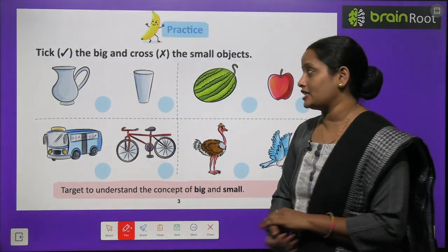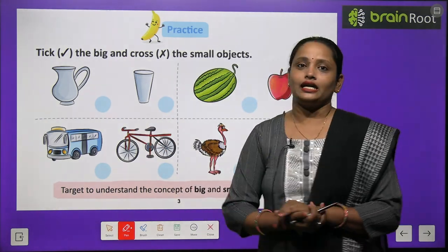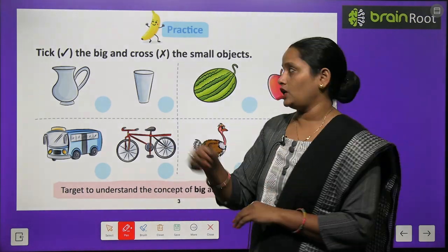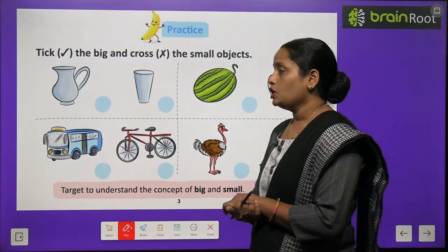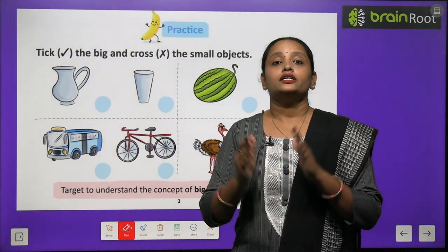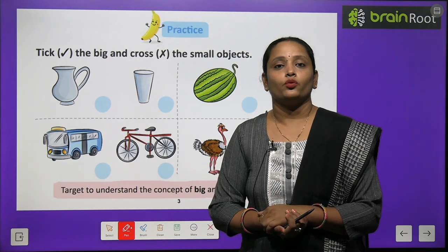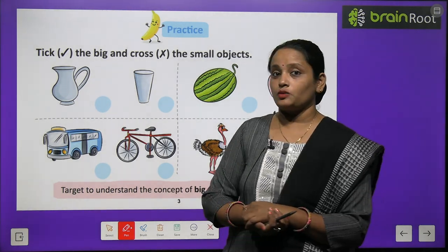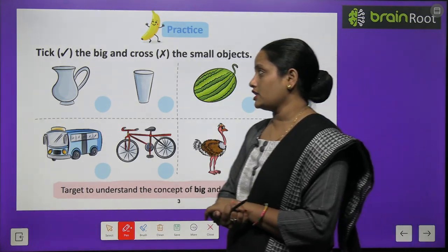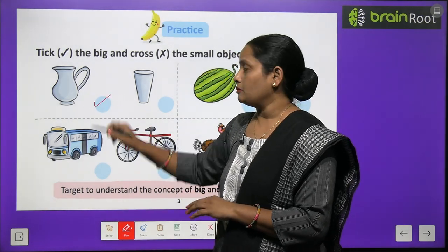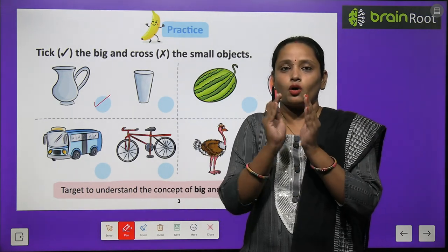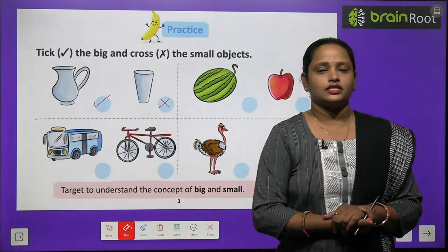Yahaan pe jo first picture hai, ismein ek jug hai aur doosra hai glass. Toh aap paani peete hain na? Jug mein mammi bohut sara paani leke jaati hai aur glass mein toh only one glass hi aata hai. Toh aap batao, which one is bigger? Jug ya phir glass? Jug is big, so tick, and glass is small, so let's cross it.